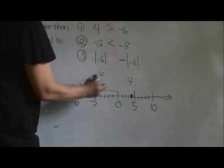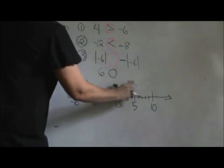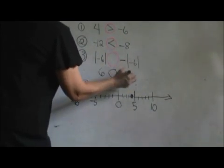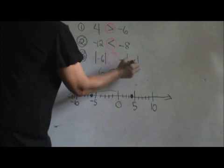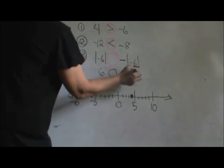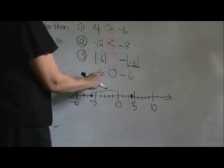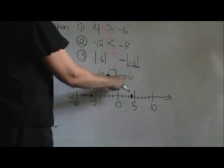So that is a positive 6. And we are going to compare that to the negative of the absolute value. Well the absolute value of negative 6 is positive 6. So really we are comparing positive 6 to negative 6.